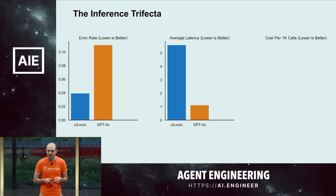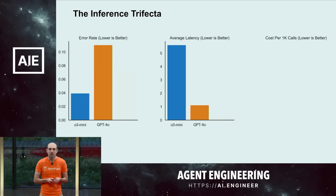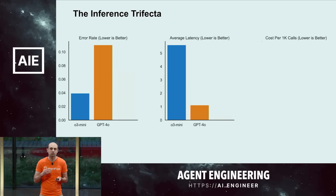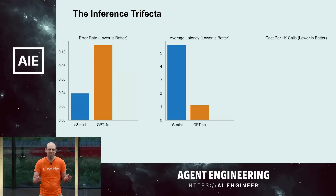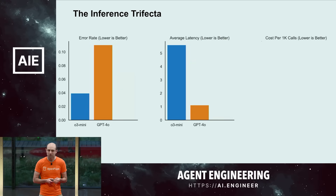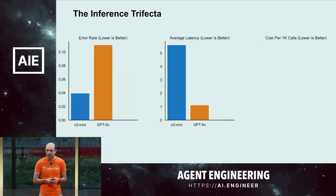This is somewhat task dependent, depending on how much, for example, O3 has to think. As you're measuring, you also want to make sure you're using real production conditions and a real diversity of tasks that match what you're actually doing, at a reasonable concurrency level that matches your production.